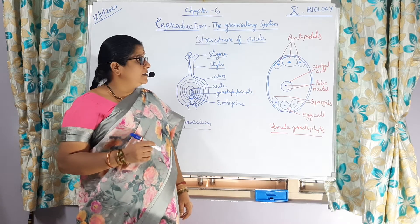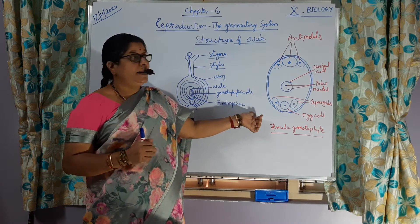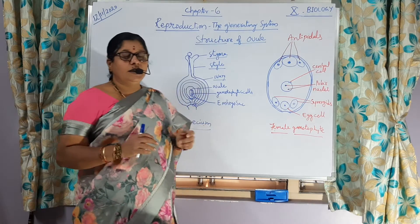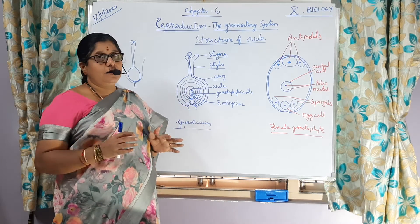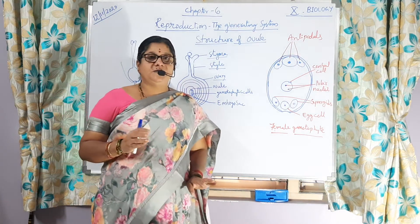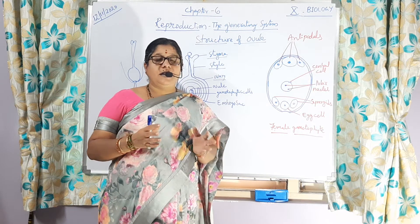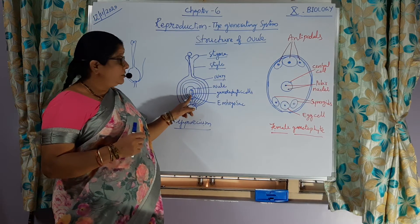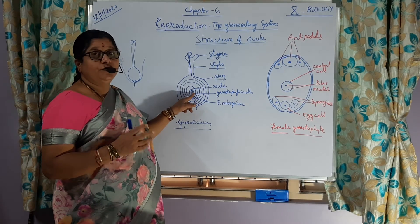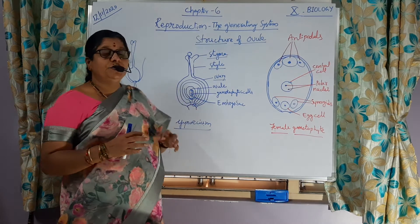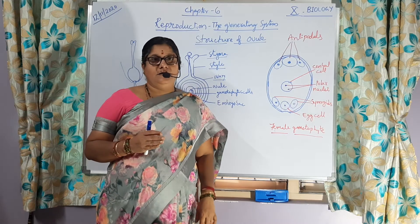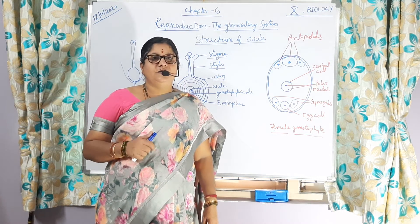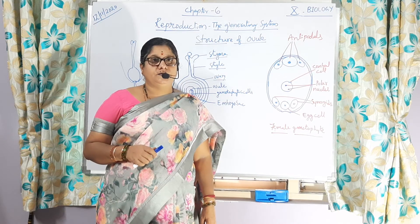After fertilization, so many changes are going to happen in the floral parts. Calyx and corolla perish off. Sometimes we observe calyx attached to the fruit, and the ovary is going to change into fruit, and ovules are going to be converted into seeds. We will discuss how this is happening further.